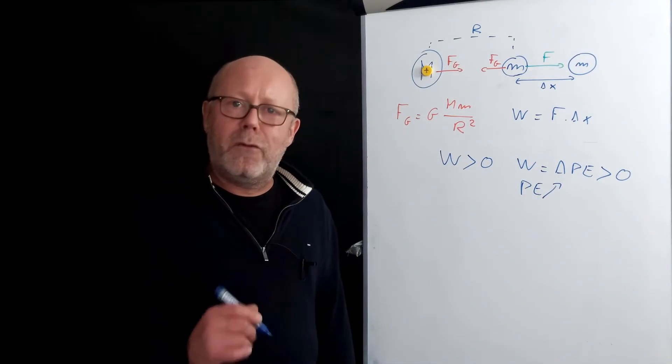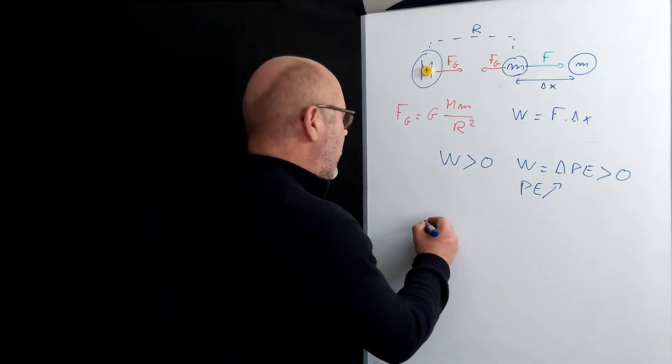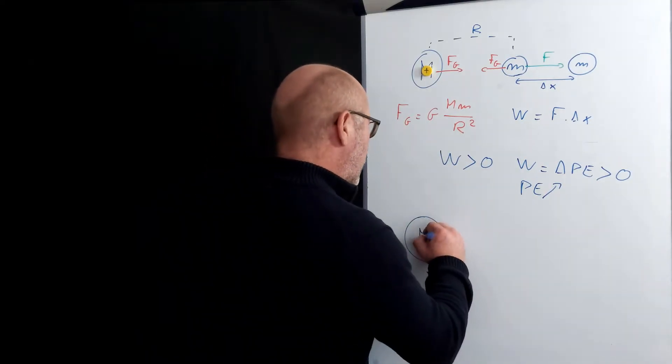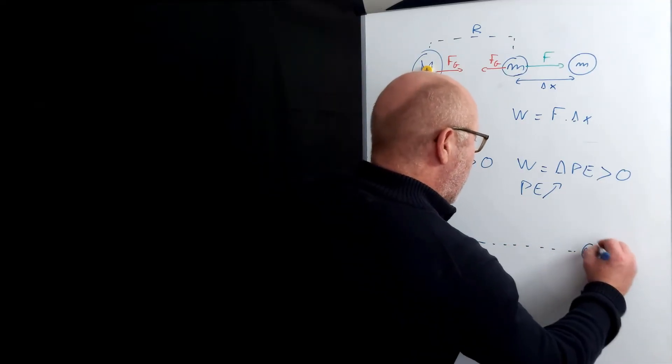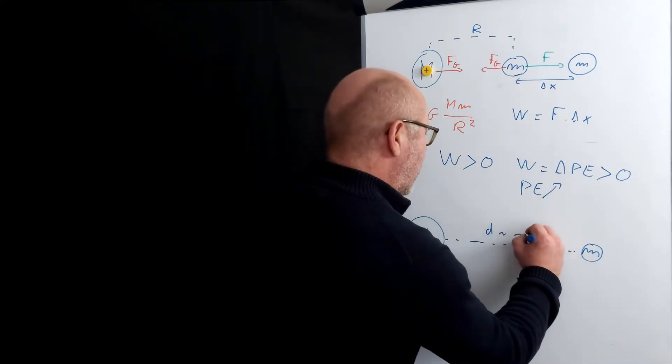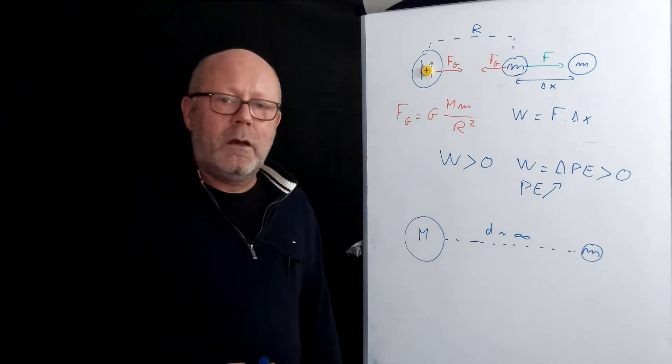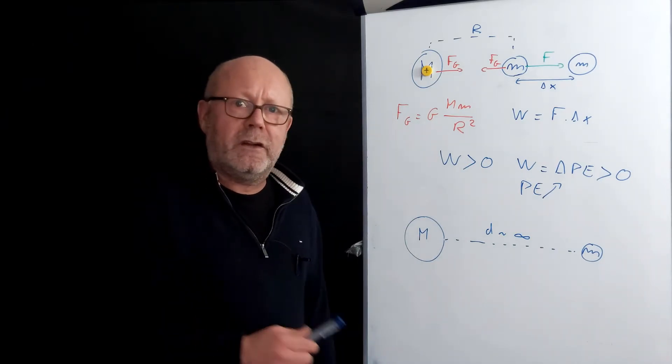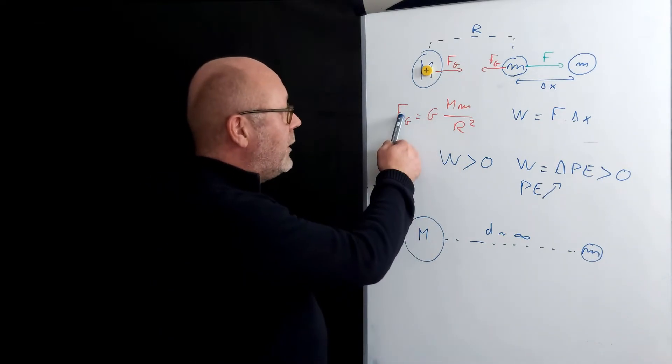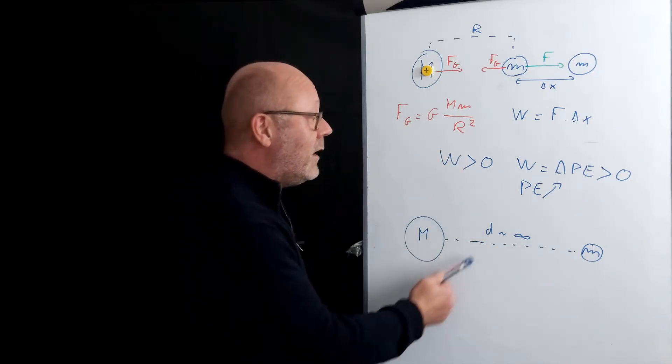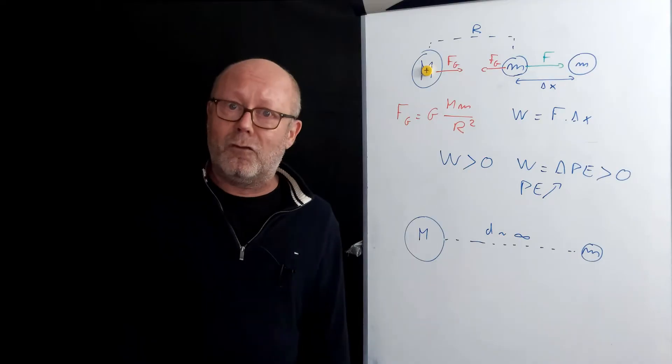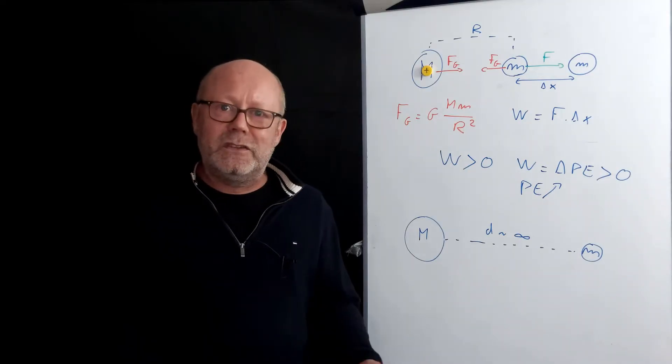Suppose now that I want to separate fully the two objects. That means that the mass M is at a distance from mass little m that can be considered like infinite. What happens to the gravitational interaction in that case? You see, the gravitational force is inversely proportional to the square of the distance between the two objects. In that case, there would be no gravitational force.